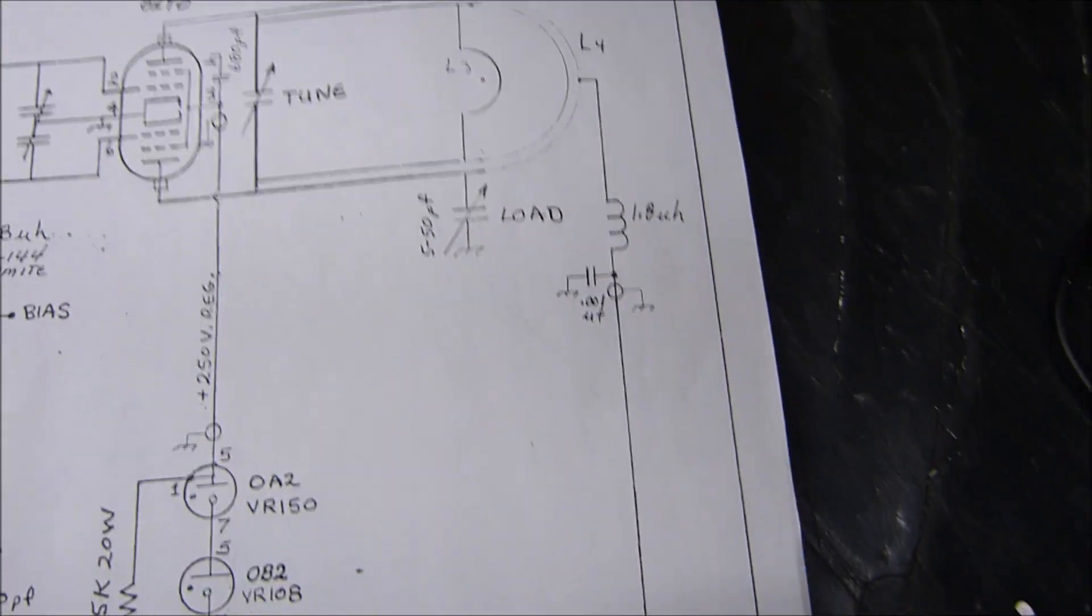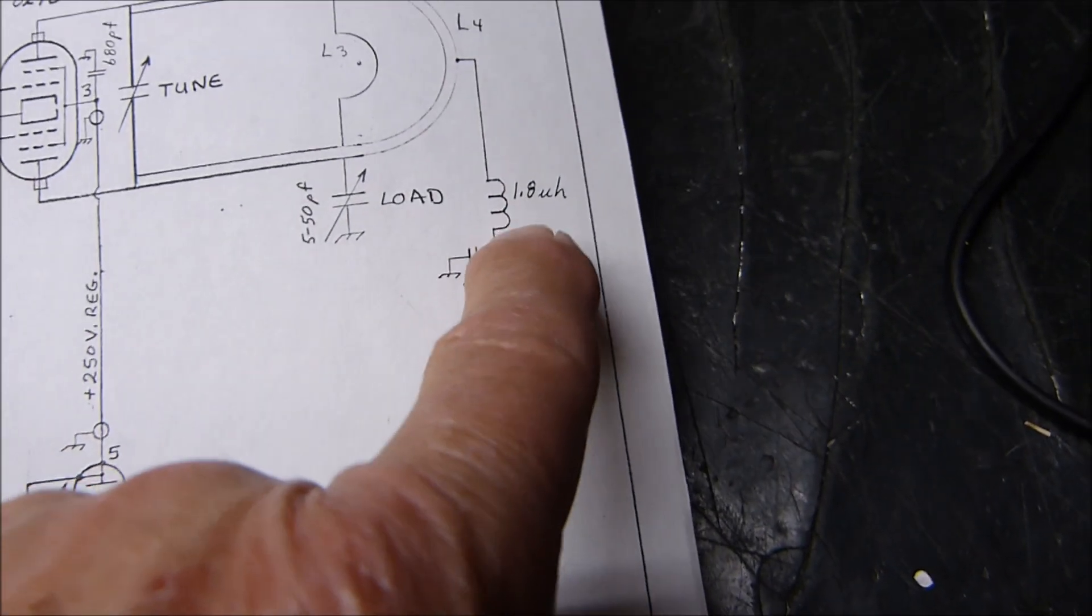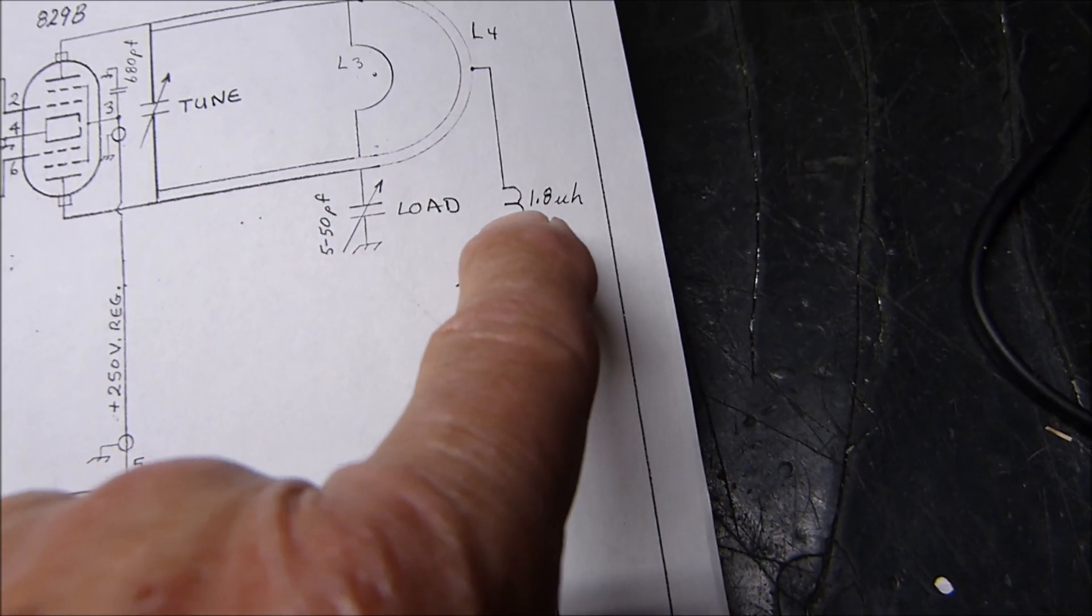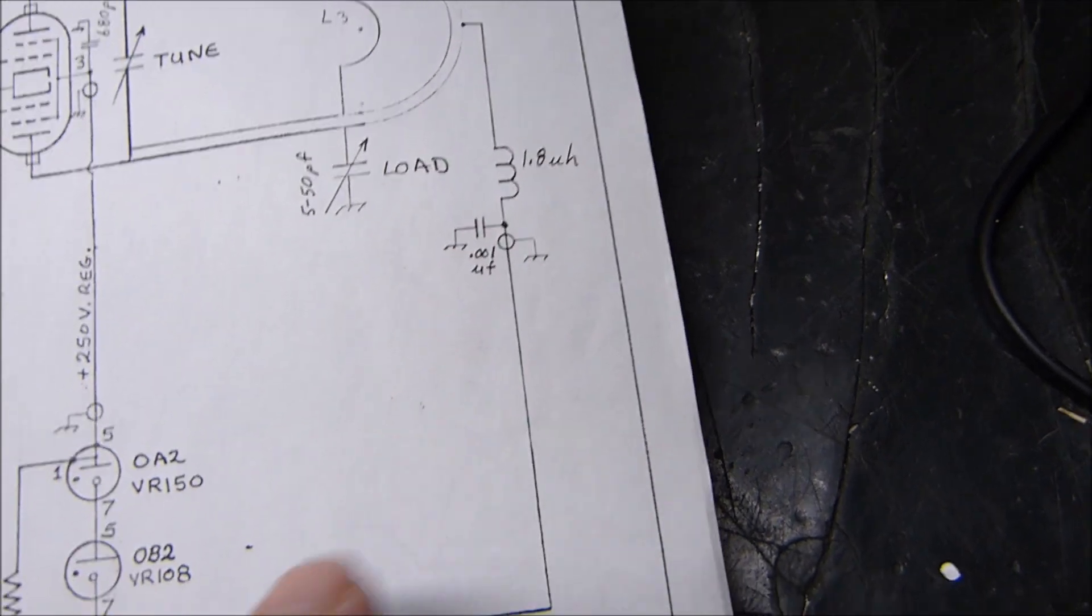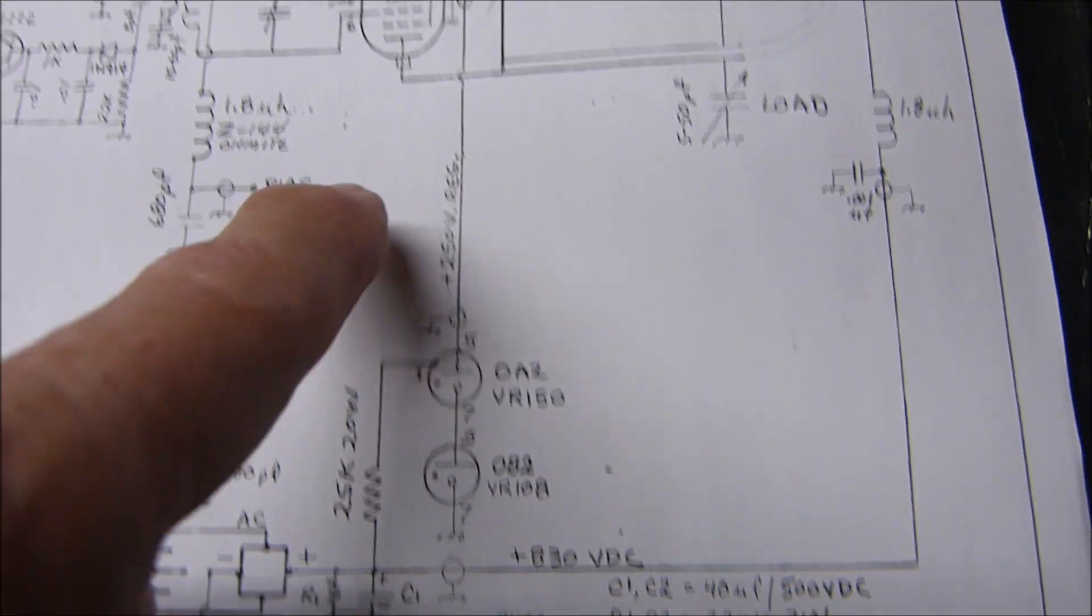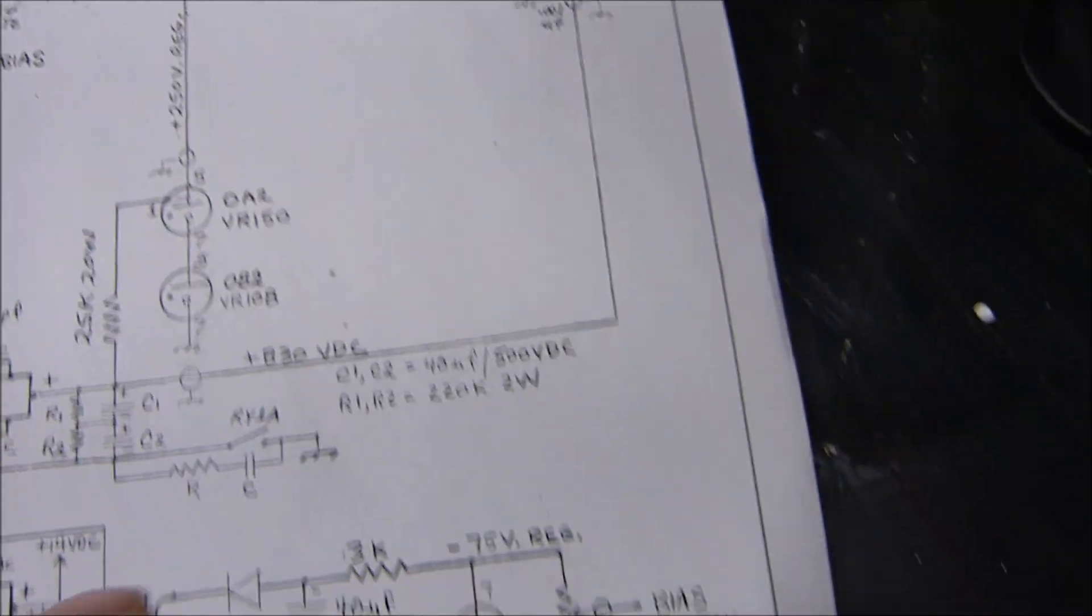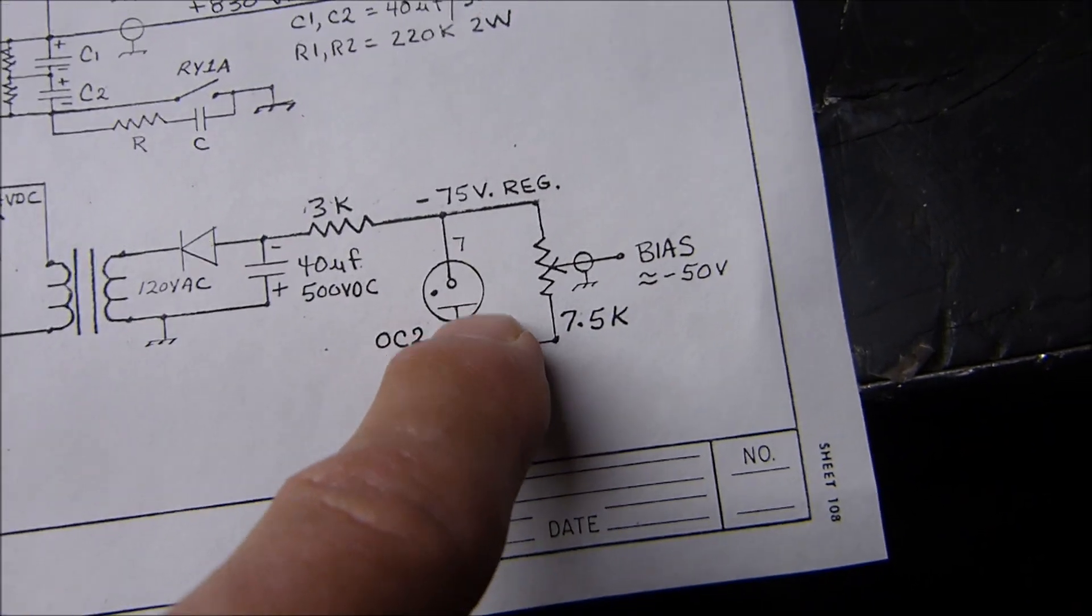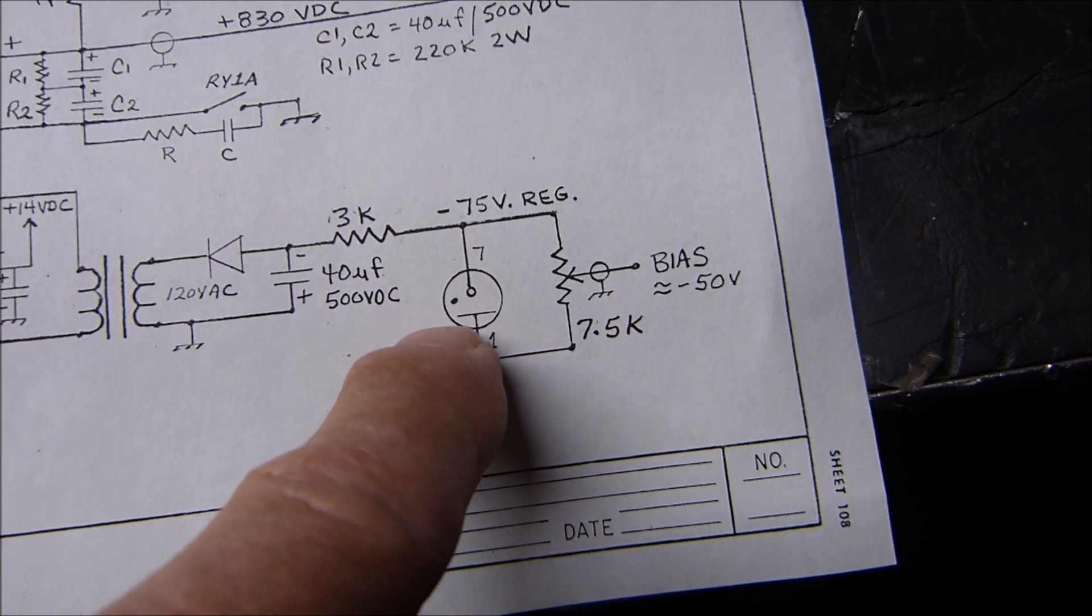It uses little tiny 1.8 microhenry RF chokes. Here's the VR tubes for the screen, and then it's got a VR tube down here with adjustable bias for the grid.